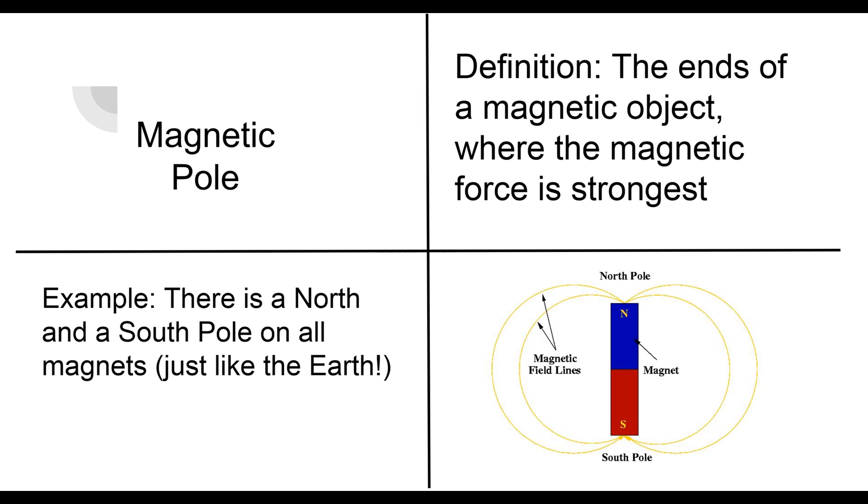And that's what we can see on the image I have over here. We have a north side and we have a south side in this image. And we can see there's these lines traveling basically from one end to another in these big arcing kind of half circles. Those are what we call magnetic field lines.